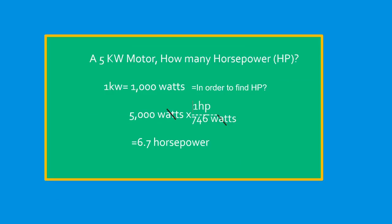Next question: a 5 kilowatt motor — how many horsepower? We know 1 kilowatt = 1,000 watts, so 5 kW = 5,000 watts. Dividing 5,000 by 746 (watts per horsepower) gives approximately 6.7 horsepower.